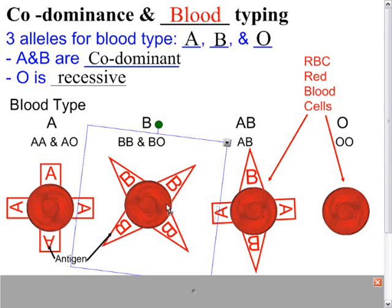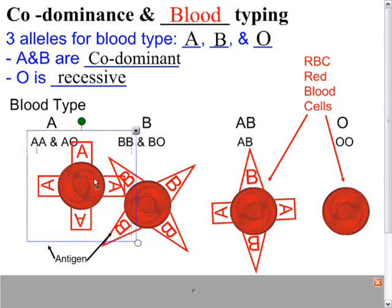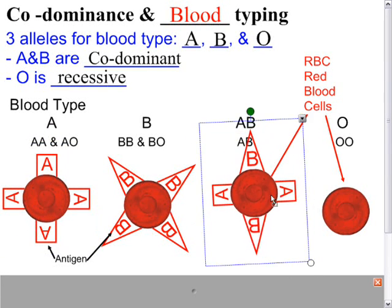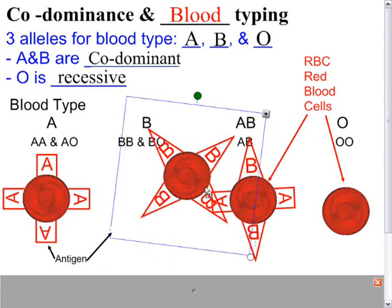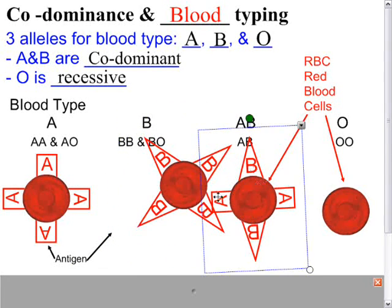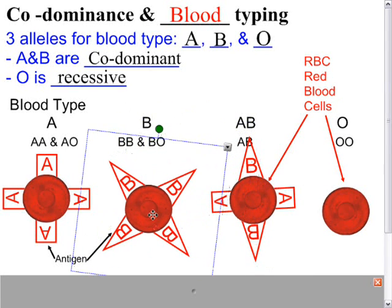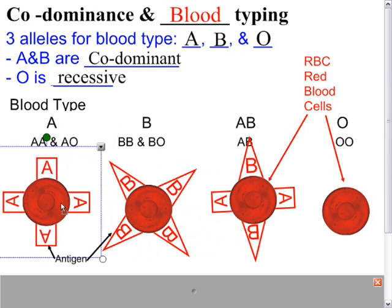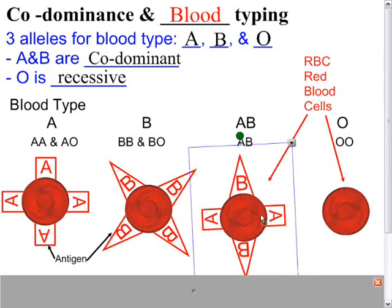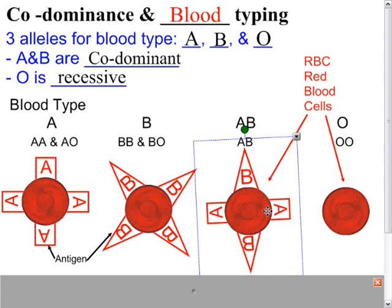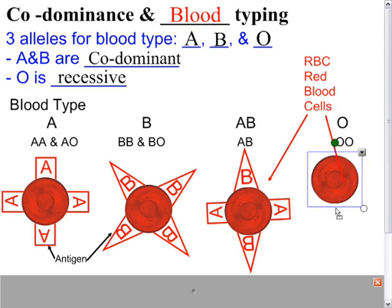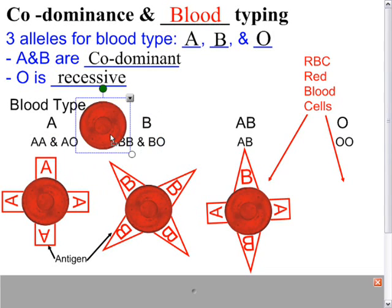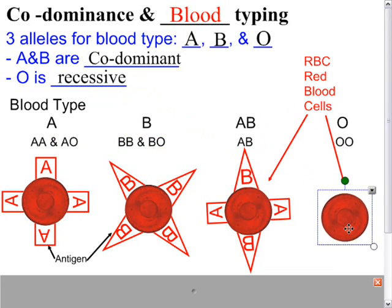If you are type B and you're given type A, the same thing happens — your body will attack the A antigens, the blood will clot, and you will die. However, if you are type AB and you're given type B blood, that's perfectly fine because your body already knows the B antigen and recognizes it as self. The same applies if type AB is given type A. This is why type AB is known as a universal acceptor — it can accept all types of blood. Type O is the universal donor: without any antigens on the outside, you can give type O to AB, type B, or type A without interference.